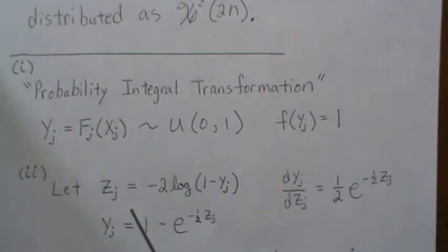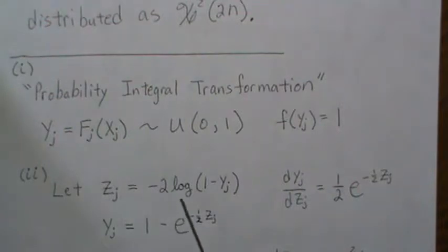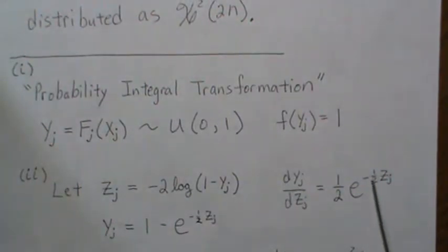So now let's let Zj equal to -2*log(1-Yj) and let's find the distribution of Zj. So what we do is we back solve for Yj and we get 1 - e^(-1/2 * Zj), and then the derivative of this with respect to Zj is (1/2)e^(-1/2 * Zj).